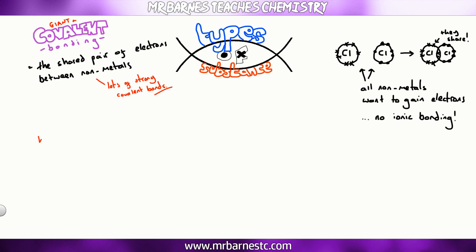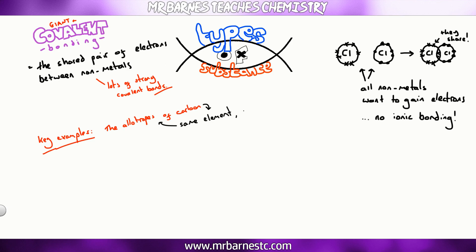The key examples of giant covalent compounds you need to know are all allotropes of carbon. An allotrope is something that's all made of the same element — carbon — but has different structures. The main ones being diamond and graphite.